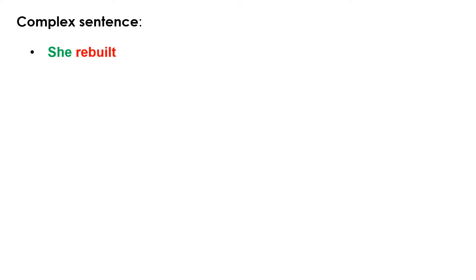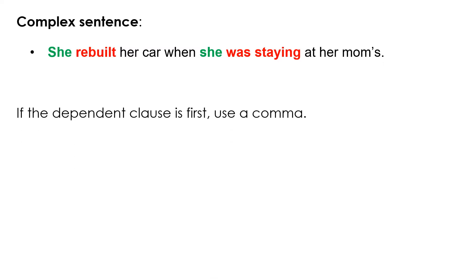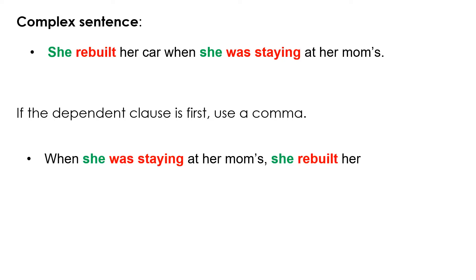Here is a complex sentence: 'She rebuilt her car when she was staying at her mom's.' If the dependent clause is first, use a comma — for example: 'When she was staying at her mom's, she rebuilt her car.' So we use a comma after the dependent clause if it's at the beginning of the sentence. The main clause has the main subject and verb.